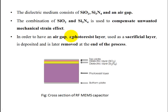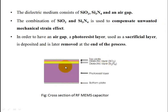When a photo resist layer — used as a sacrificial layer — is deposited and then removed, an air region is formed. Once the photo resist layer is deposited and subsequently removed, an air gap is formed in the structure.